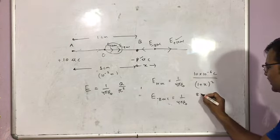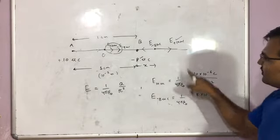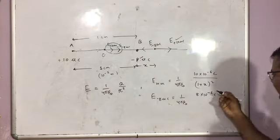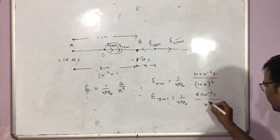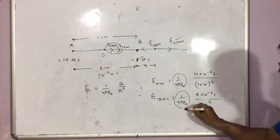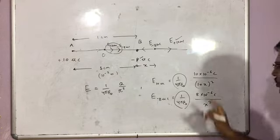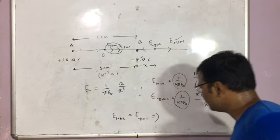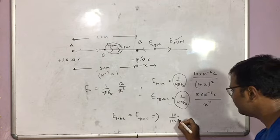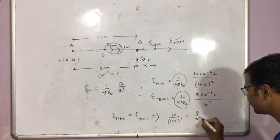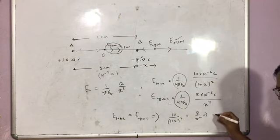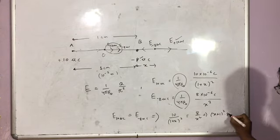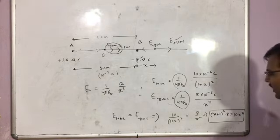The magnitude of the field due to minus 8 micro coulomb is 1 by 4 pi epsilon 0 times 8 times 10 to the power minus 6 divided by x squared. Do not take the negative sign here, because direction is already accounted for. Equate: the 4 pi epsilon 0 and 10 to the power minus 6 terms cancel, giving 10 by (1 plus x) squared equals 8 by x squared, which implies 8(x plus 1) squared equals 10 x squared. Solve this to find x.